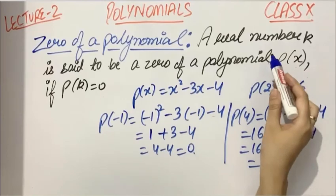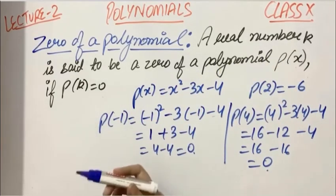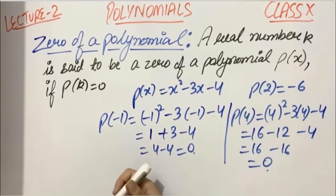Because as I told you, a real number at which the polynomial attains a value of 0, we call it a zero of the polynomial. Now let me discuss one more example here.